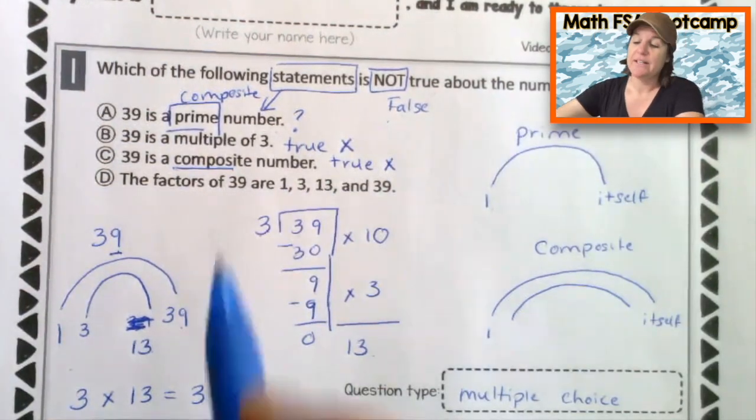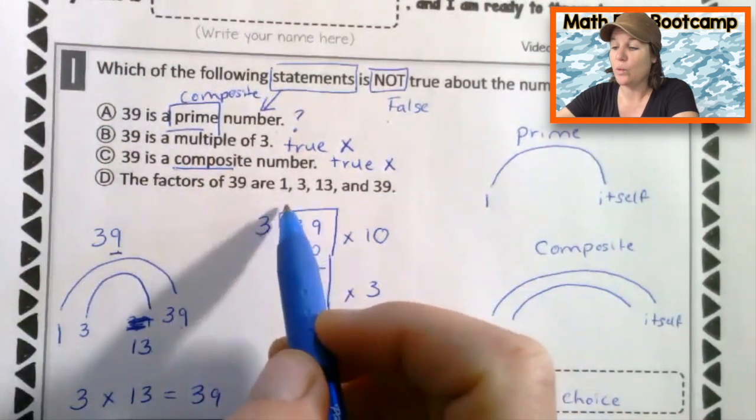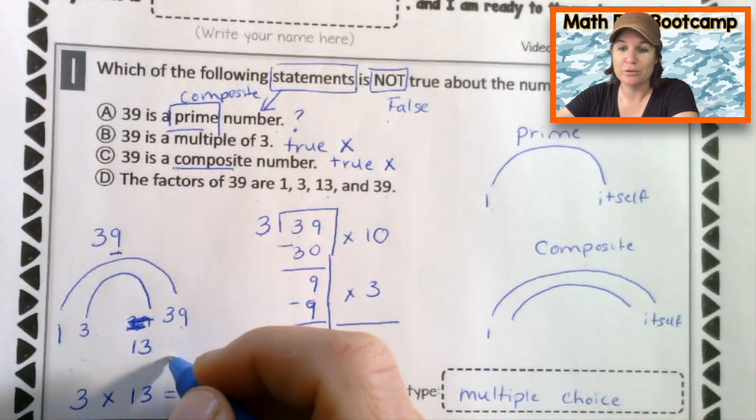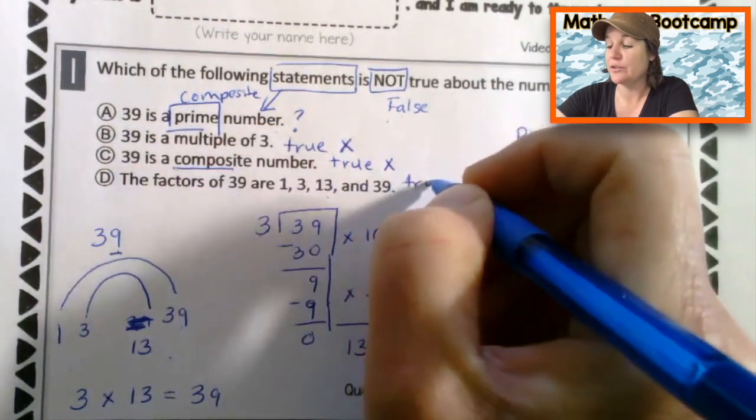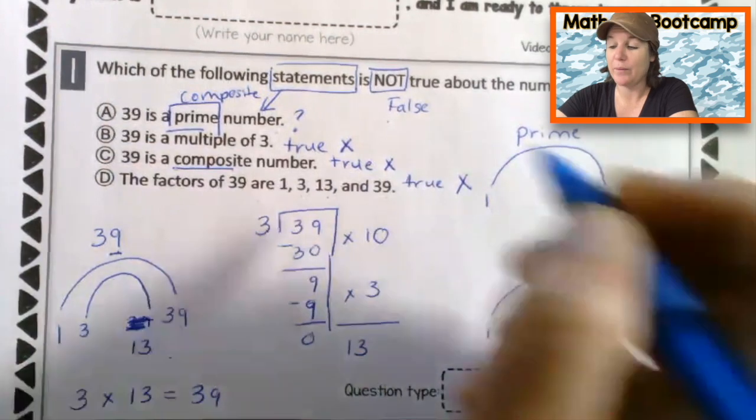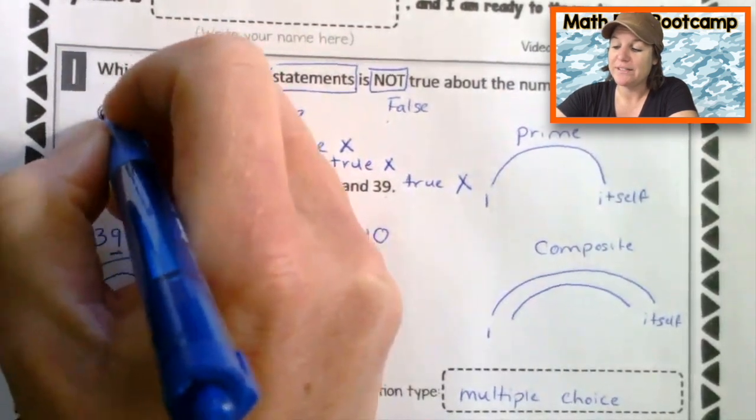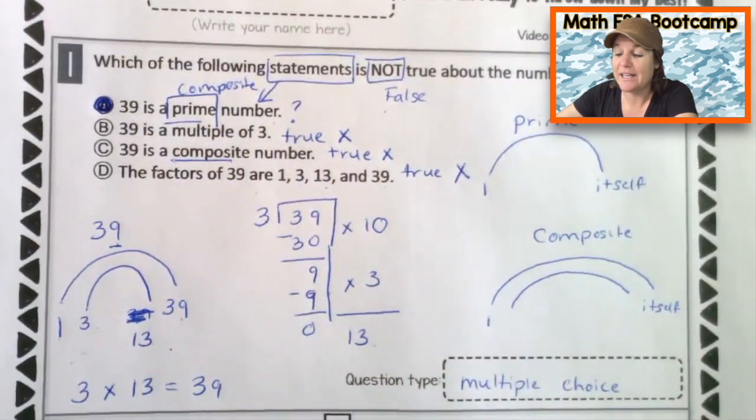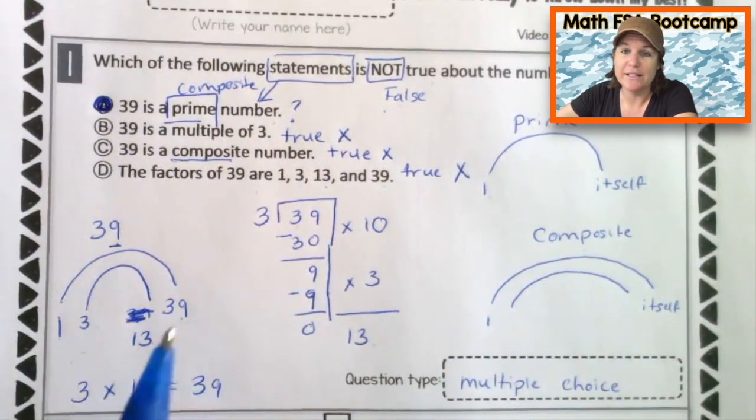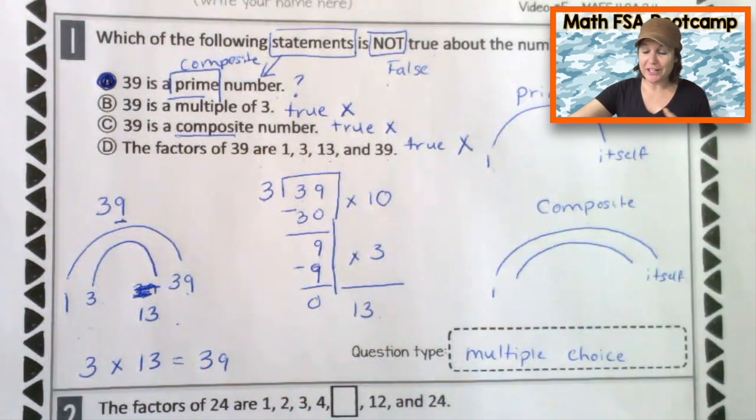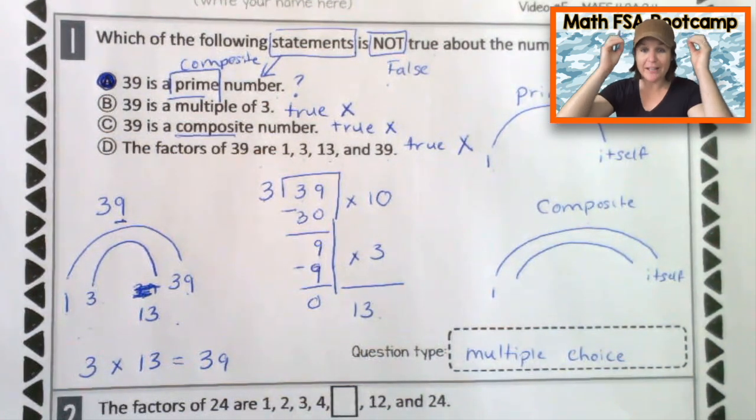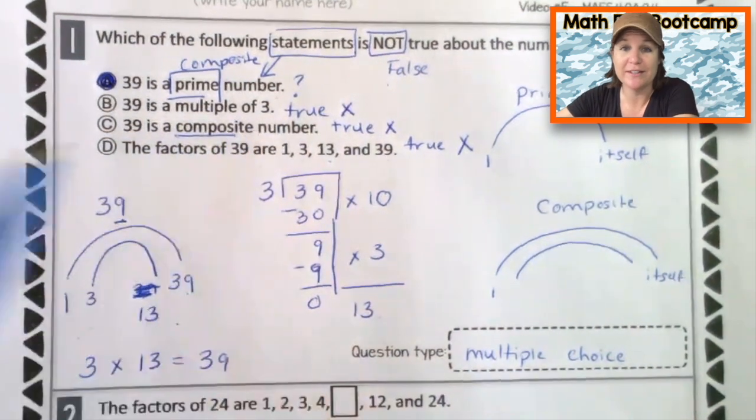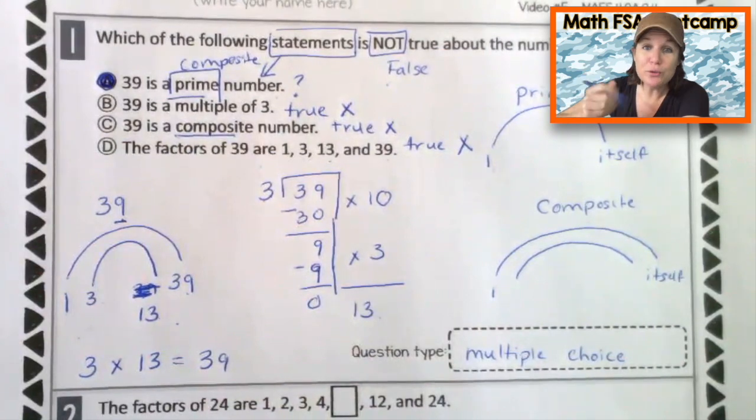Choice D says the factors of 39 are one, three, 13 and 39, which is true right here. So this is true, which is not what we want. We want the one that is not true, the one that is false, which is A. It is not a prime number because it has more than one and itself as a factor. Make sure that you are showing your journey on paper, showing all the thinking. It helps to slow you down. I love to mark up my tests just like this.